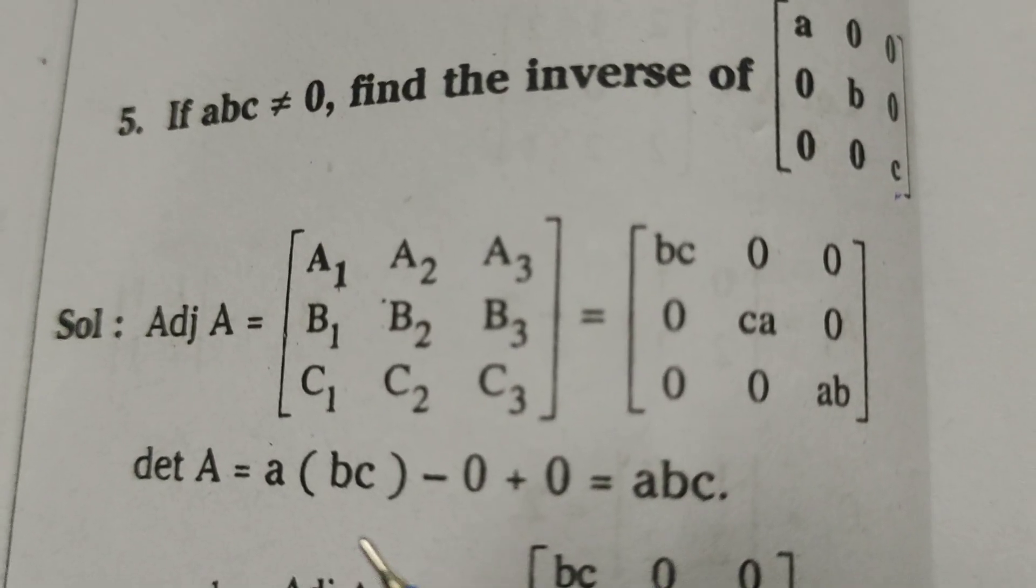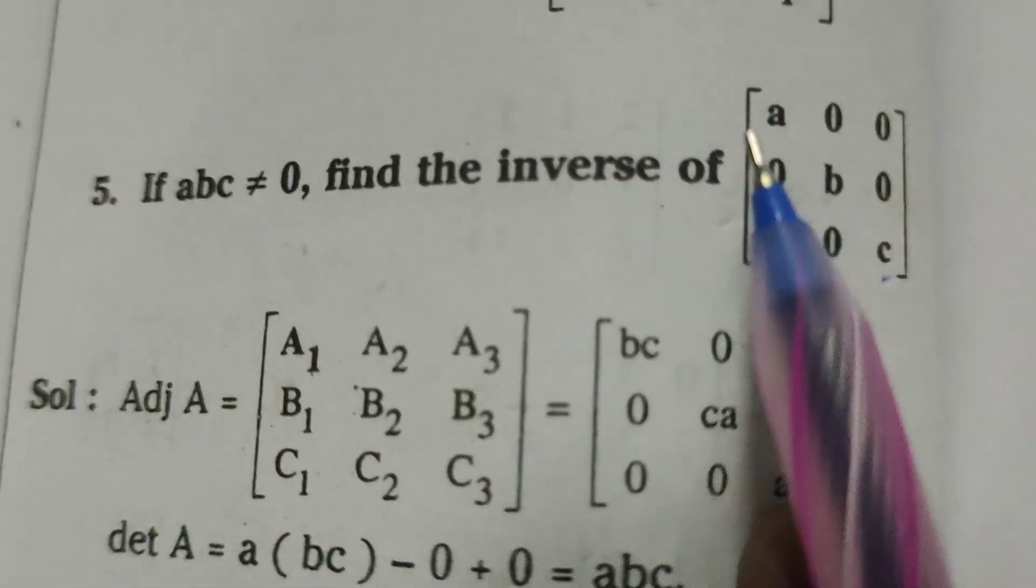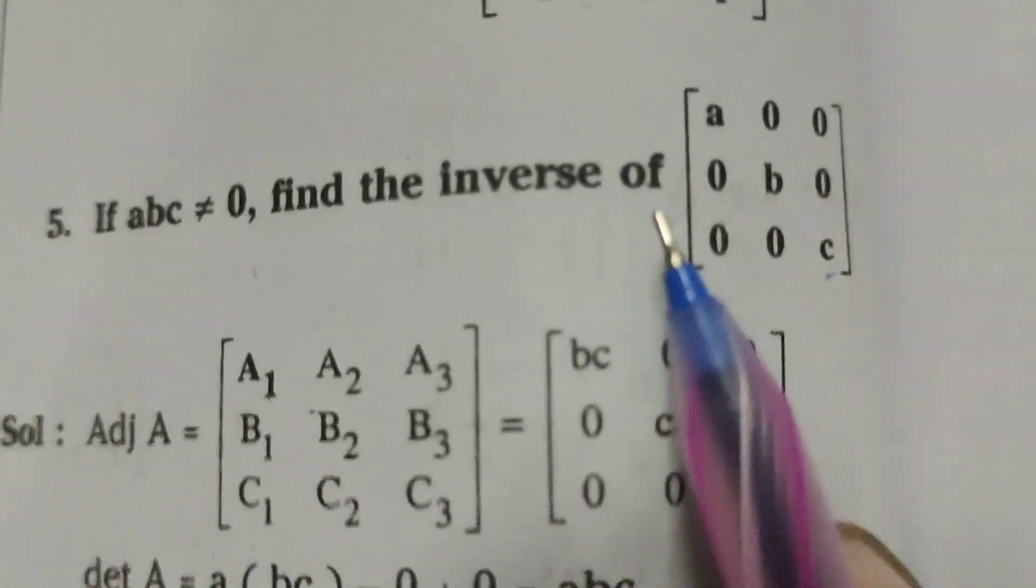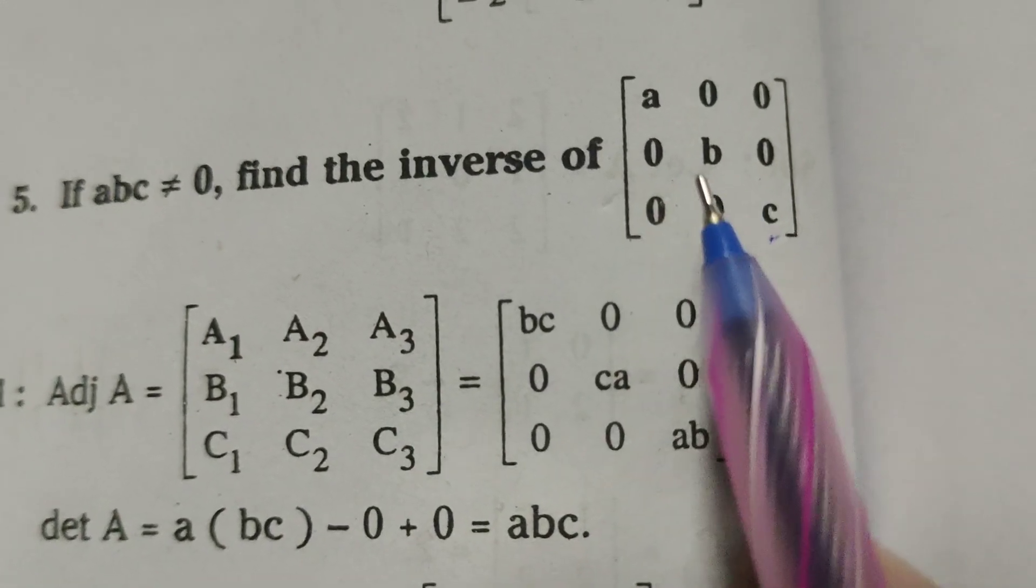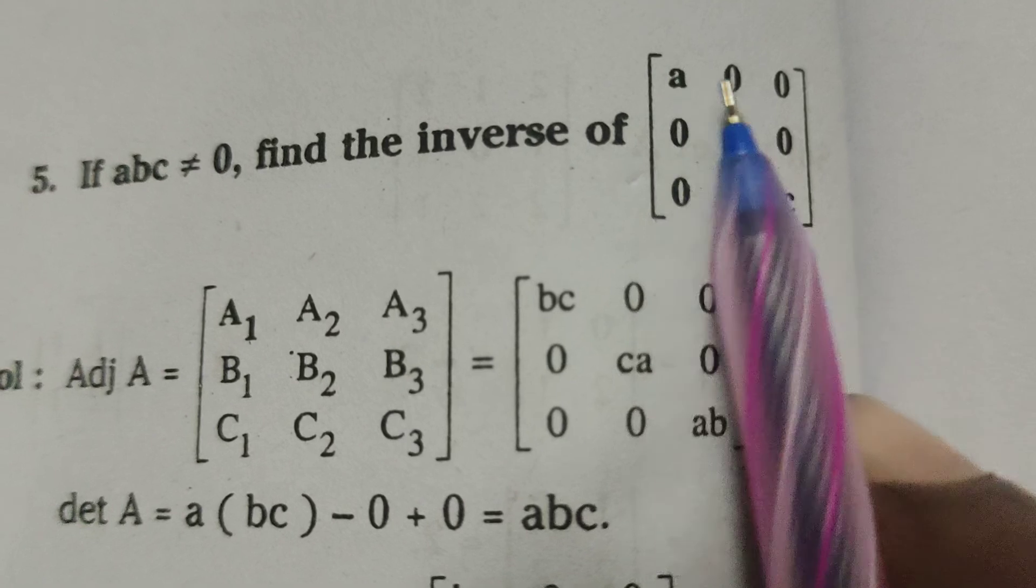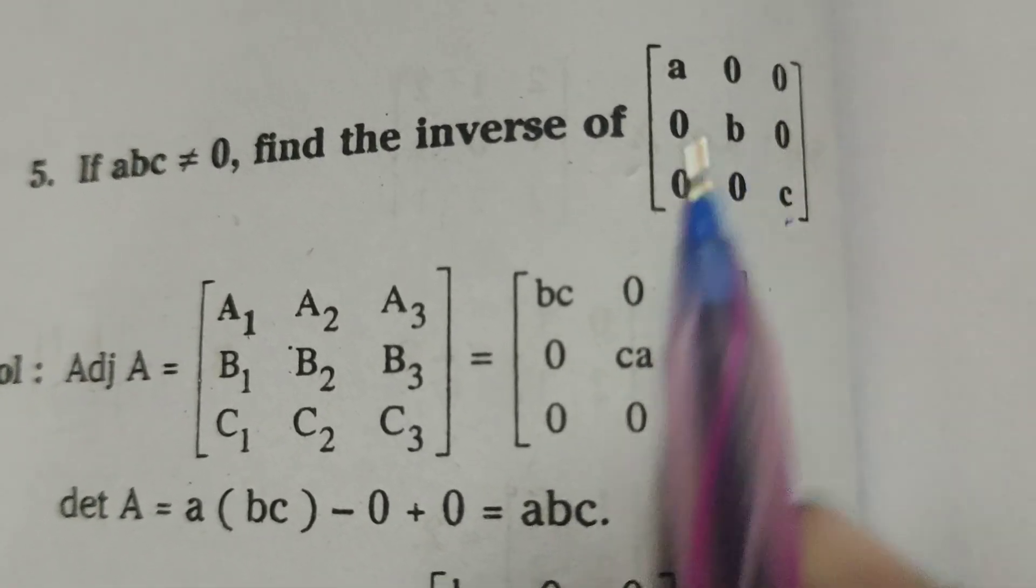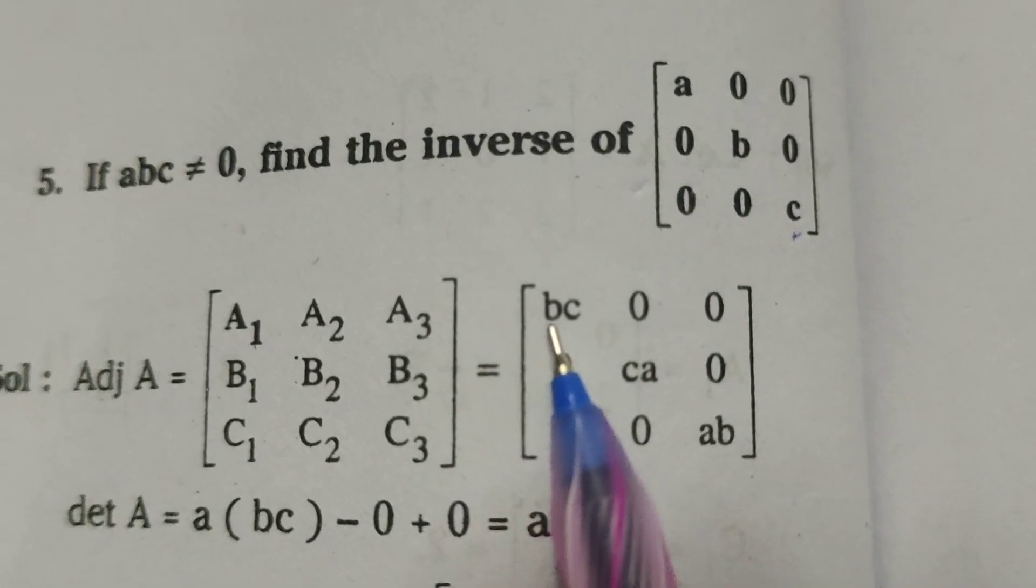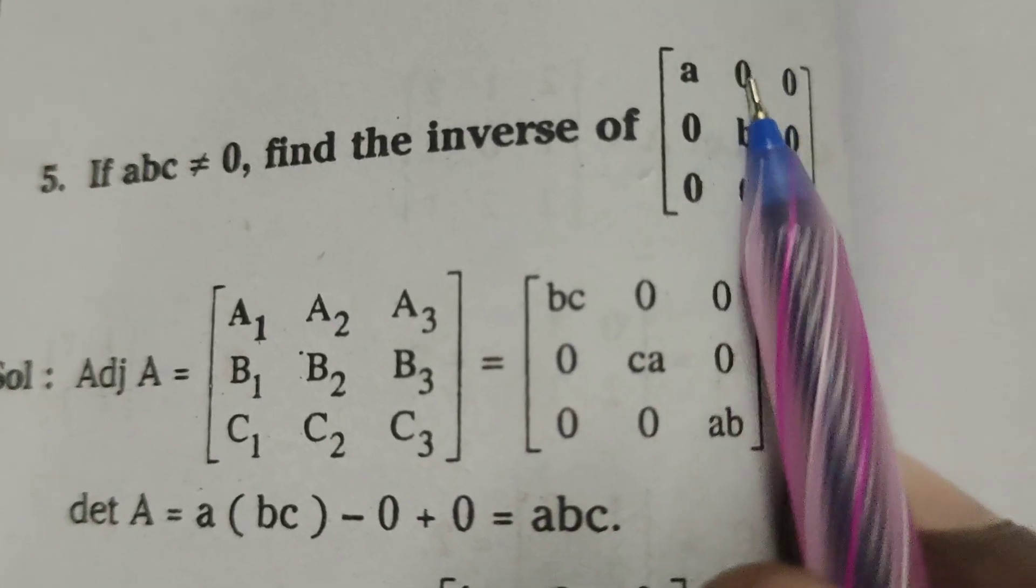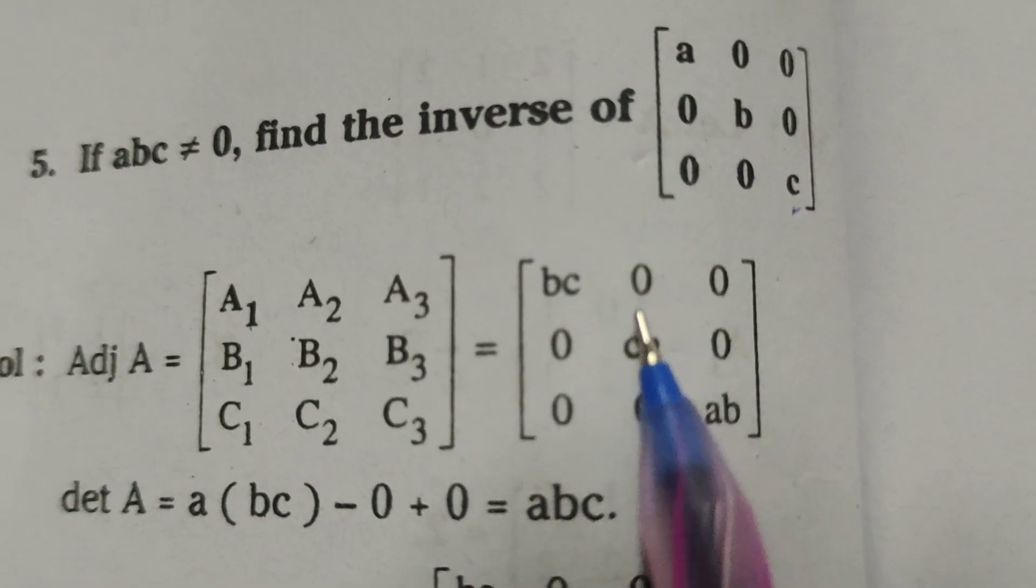det A equals to, here in this matrix, adjoint A means first of all A into, except this row and this column, bc minus 0, then we will get bc. Next, 0 times 0 times 0, we will get 0.